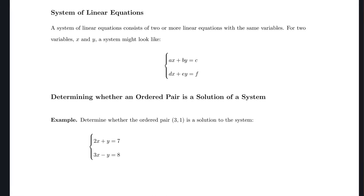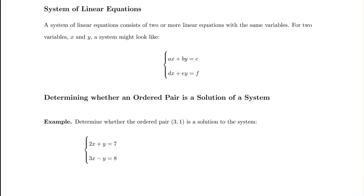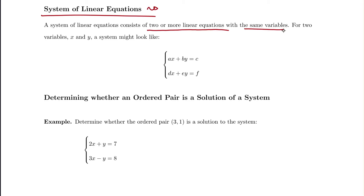In our previous videos, we discussed how to find the equation of a straight line. We've worked with real-world problems involving taking two points, finding the equation of the line that joins those points, and using that equation to estimate future values. Now we're going to take what we know about linear equations and add another layer: systems of linear equations — when we're looking for two or more equations with the same variable.